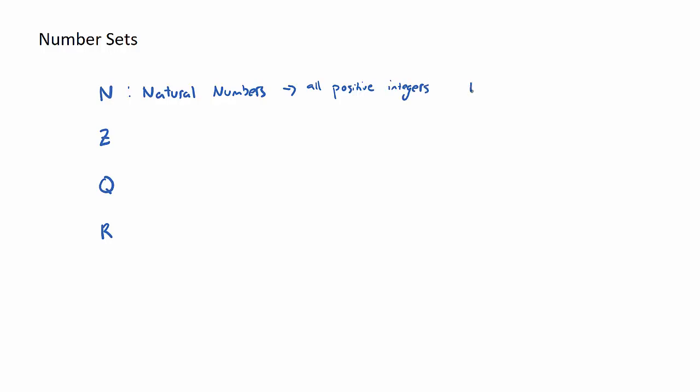So examples of natural numbers are 1, 2, 5, 1000, 250,000, etc. So all whole, so by whole I mean integer positive numbers. So 0 is not a natural number, neither is negative 2. They are not natural numbers. So that's the first one.